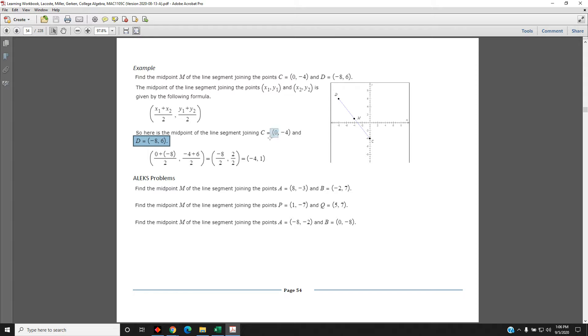First, add the x's, 0 plus negative 8, as shown here. Then divide it by 2. Next, add the y's, negative 4 plus 6, as shown here. Then divide by 2.